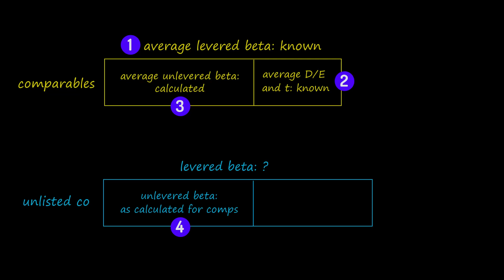Then all that remains is to re-lever beta, but this time using the DE and the tax rate of the unlisted company.